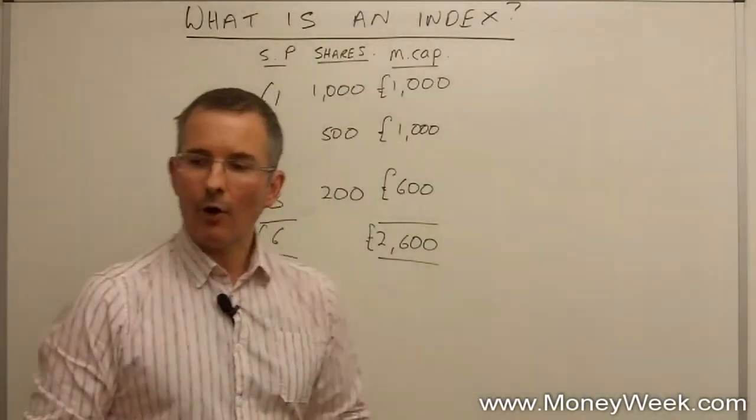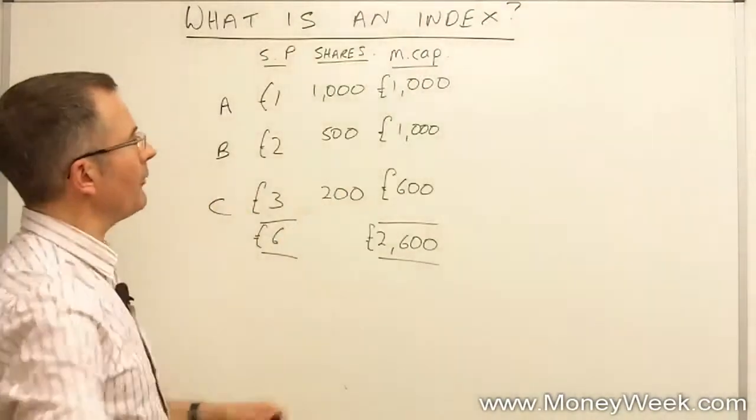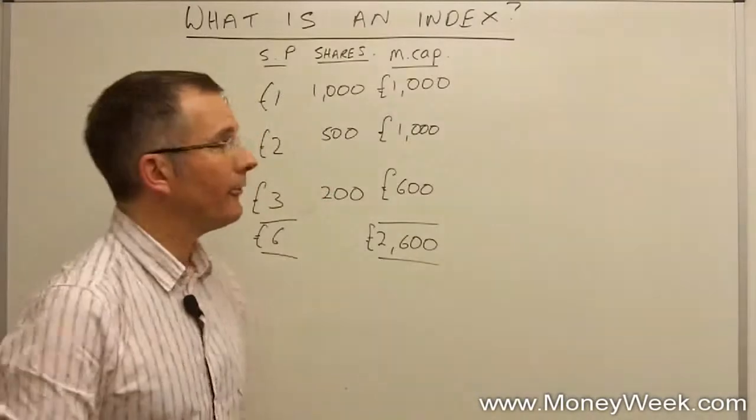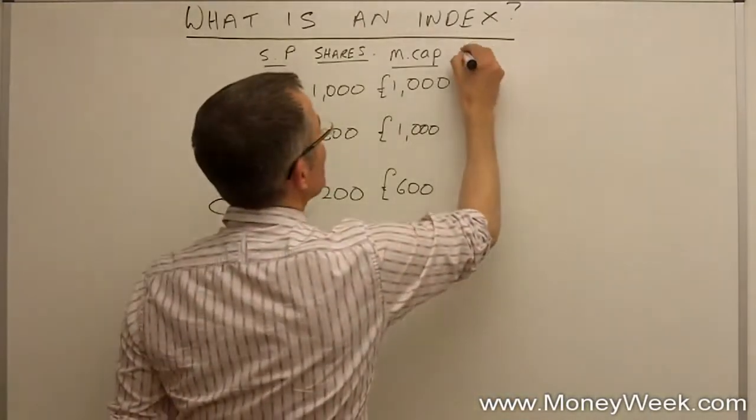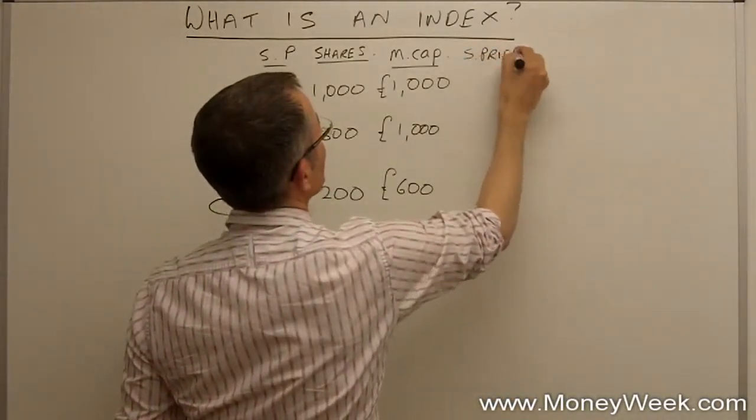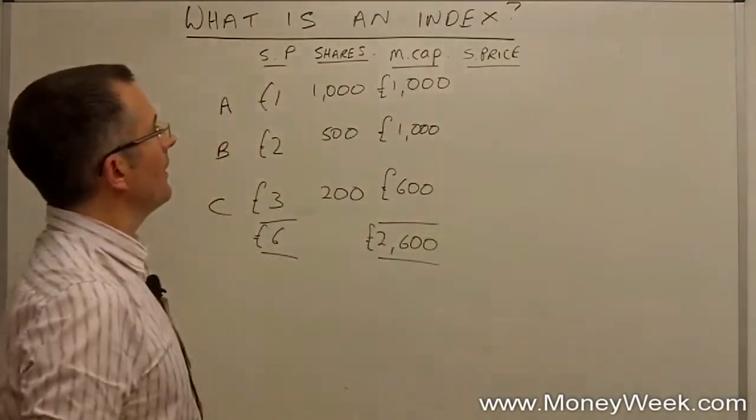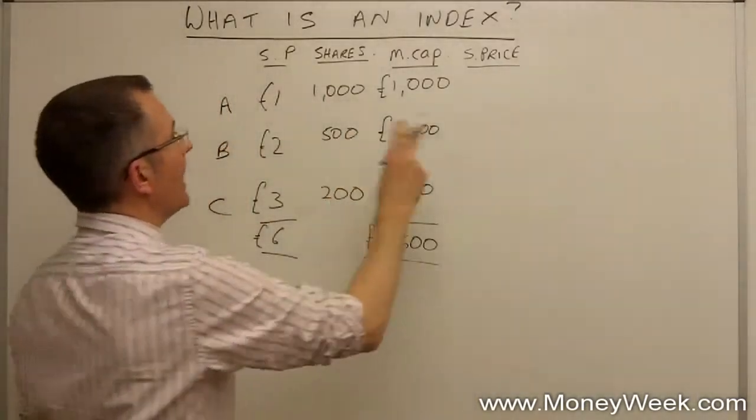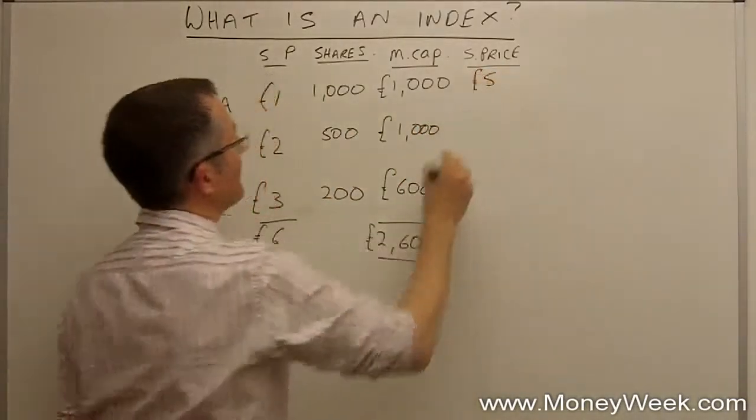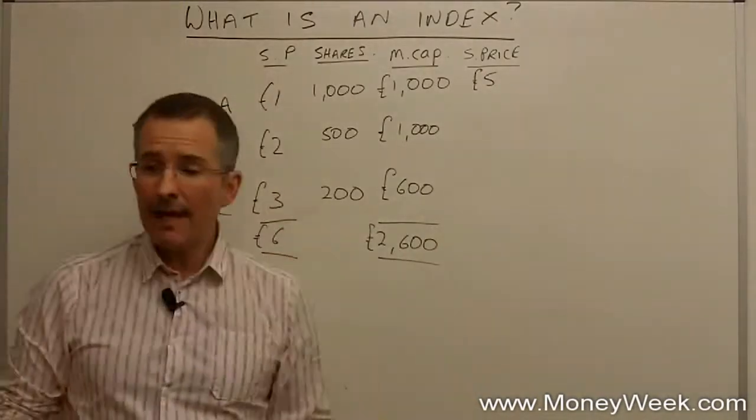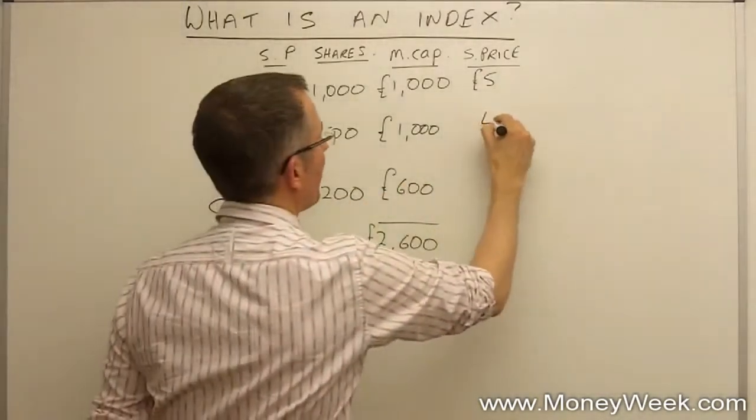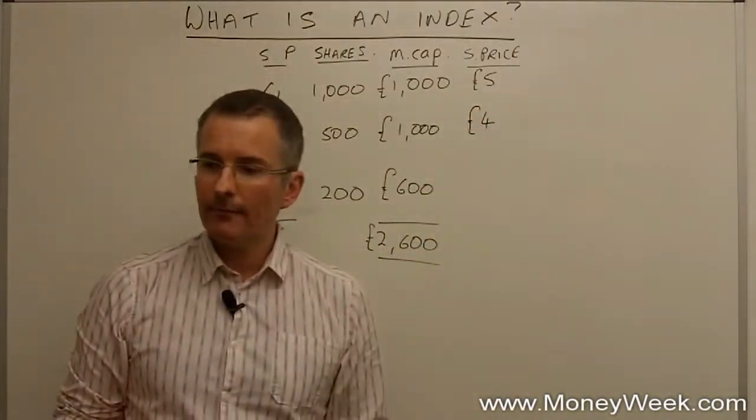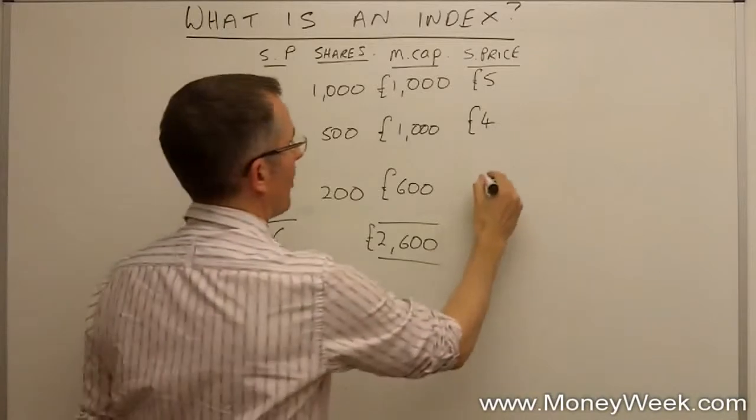Let's move things on - let's say 12 months later. None of these companies have issued any more shares, but the share prices have changed. A year later, company A has had a tremendous year - share price is now five pounds. Company B not a bad year - share price has doubled to four pounds. Company C has had a less successful year and the share price has dropped to a pound.